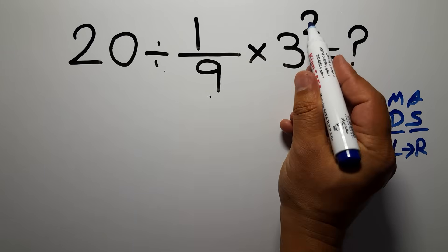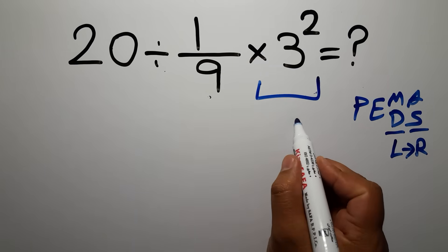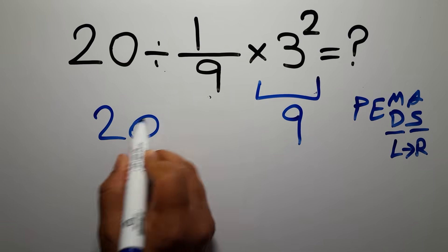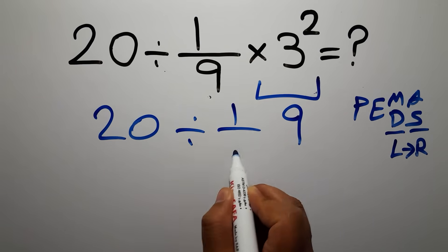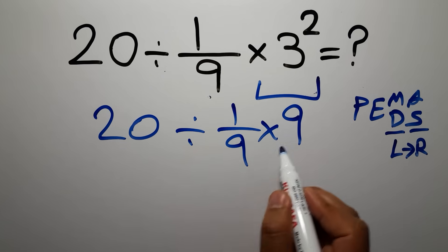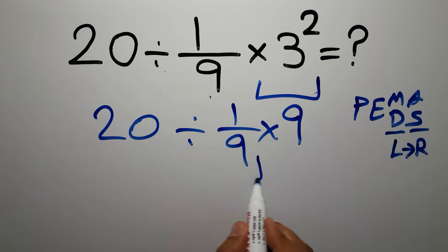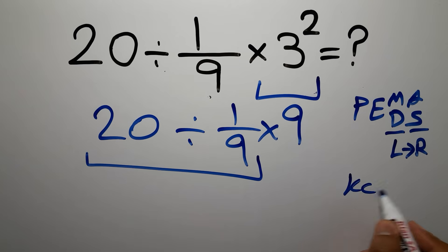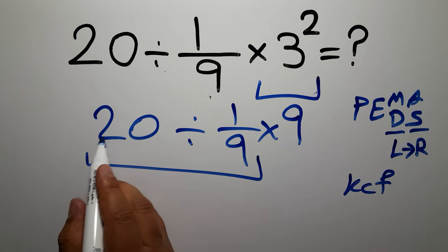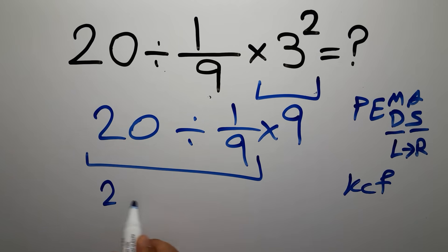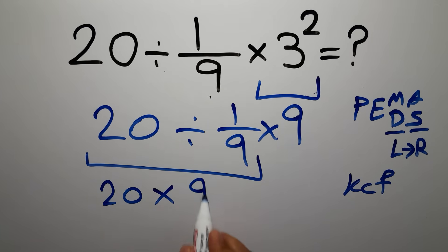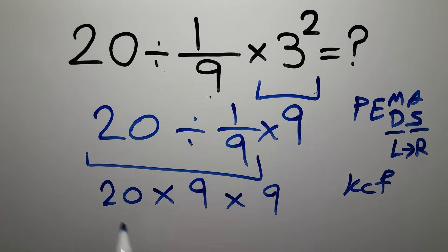So first, 3 squared equals 9, so we have 20 divided by 1 over 9, then times 9. Now we have to do this division: 20 divided by 1 over 9. According to the KCF rule — K stands for keep, C stands for change, and F stands for flip — we keep the first fraction 20, change the division to multiplication, and flip the second fraction.